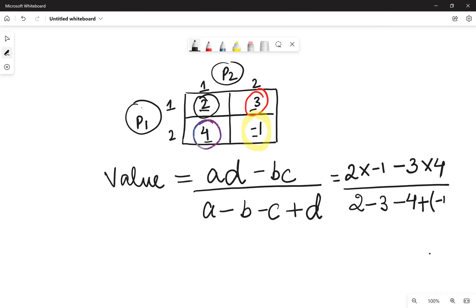This is the whole thing. Now you just need to solve this. That is minus 2 minus 12, the whole divided by 2 minus 3 minus 4 minus 1.